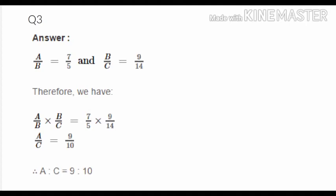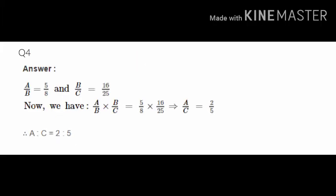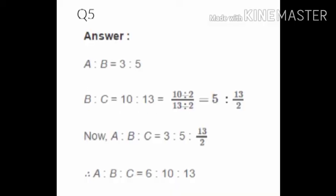Question 4 follows the same method — a:b and b:c are given. Multiply the ratios, cancel b, reduce to lowest form, and get a:c = 2:5. For a related part asking for a:b:c, given a:b = 3:5 and b:c = 10:13, we also find a:b:c.